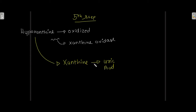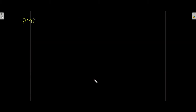Xanthine oxidase oxidizes hypoxanthine to form xanthine, and xanthine is then further oxidized to form uric acid — the final product of human purine degradation. This uric acid is then excreted in the urine.